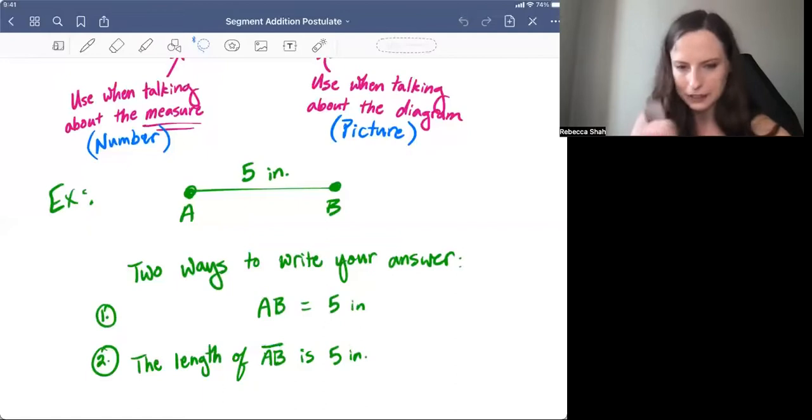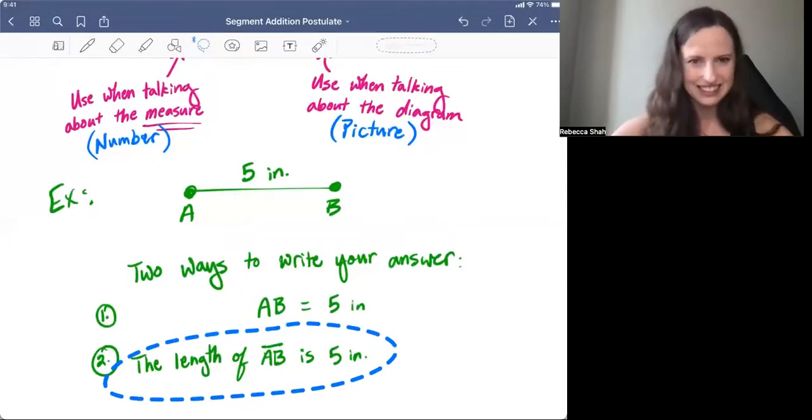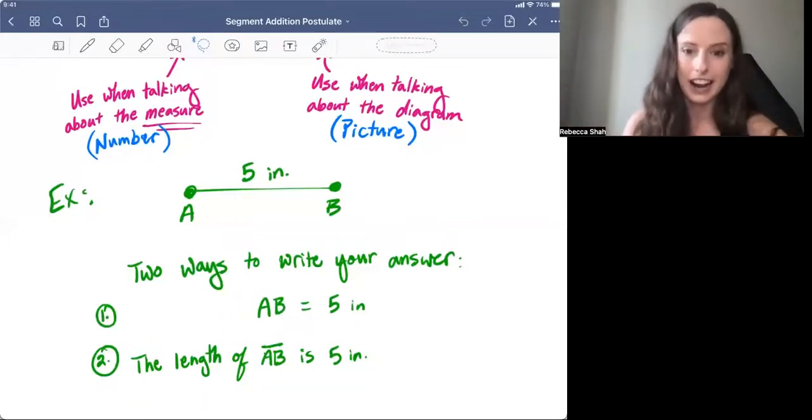Now if you really like writing the bar segment AB, that's okay. You can just say the length of segment AB is, and then you can put the number after that.